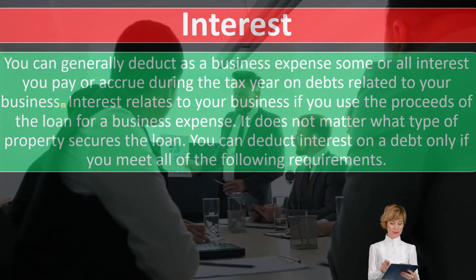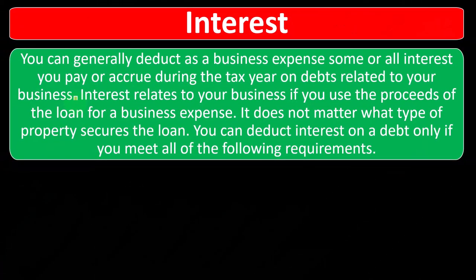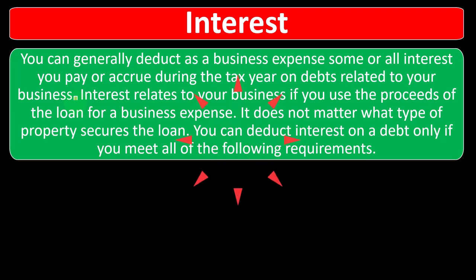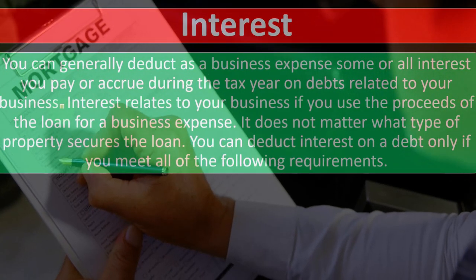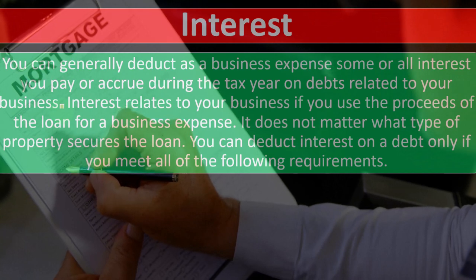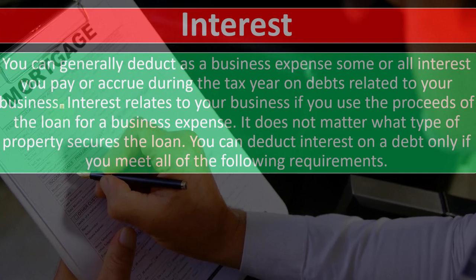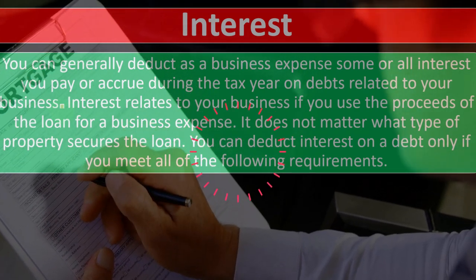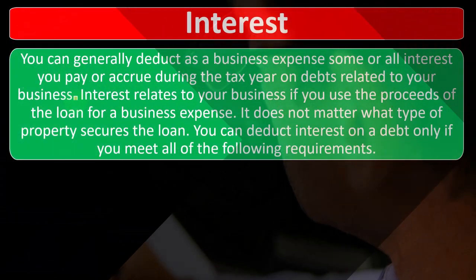The reason it gets confusing is that mortgage interest is also deductible — on Schedule A — even though it relates to a personal item. That's a somewhat unusual situation; the deduction was allowed to stimulate the housing market. You can also have a situation where you use part of your home as a business office, meaning the mortgage interest is partially for business use.